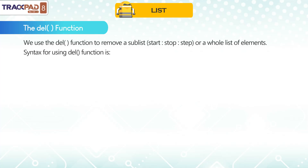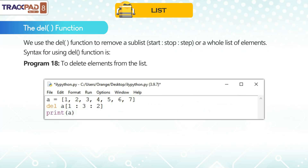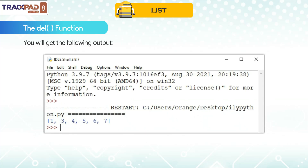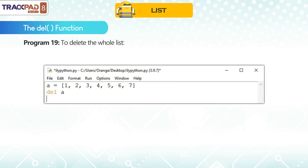The del() function. We use the del() function to remove a sub-list — del[start:stop:step] — or a whole list of elements. The syntax for using the del() function is shown in Program 18: To delete elements from the list, you will get the following output. Program 19: To delete the whole list.